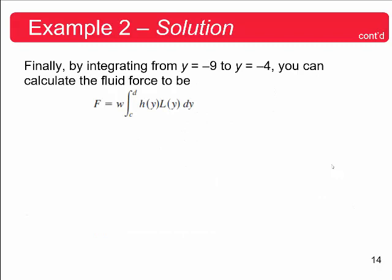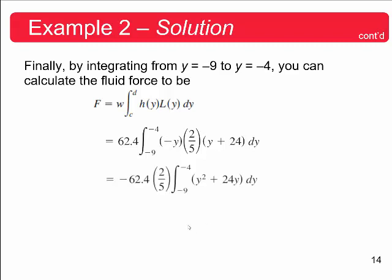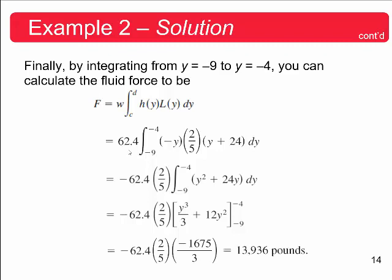So from here, you're going to integrate, finally, as I talked about, from that value of 9 feet under, so from negative 9 to negative 4. So you can calculate the fluid force by the following. W gets replaced by the weight density of water. You're going to integrate from negative 9 to negative 4. We said the height was negative y. Okay, then our function for L of y was 2 fifths times y plus 24. And, you know, you can very easily do the algebra here to integrate this. And you can see that these very simply integrate to the following. Plugging this in and simplifying, you get the following. There's roughly 13,936 pounds of pressure on this gate.